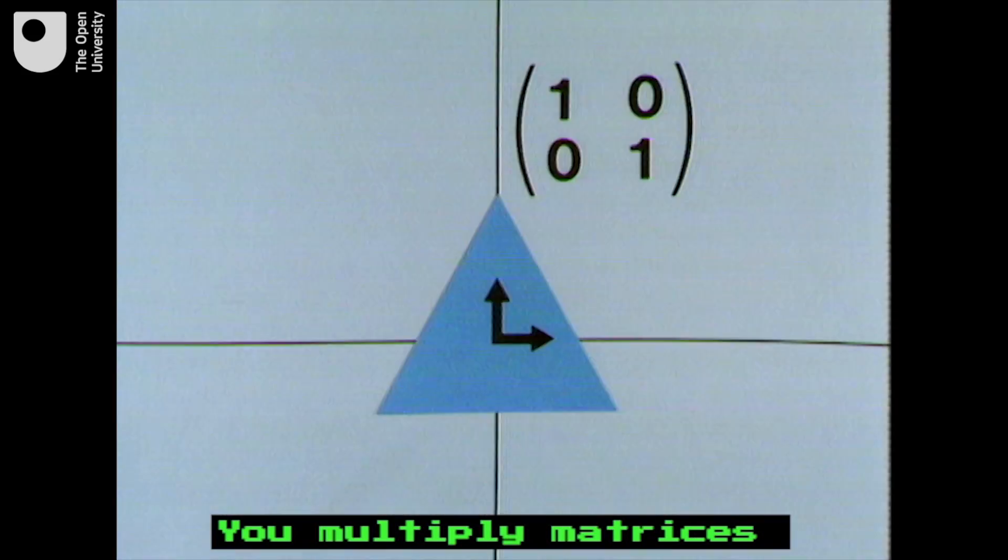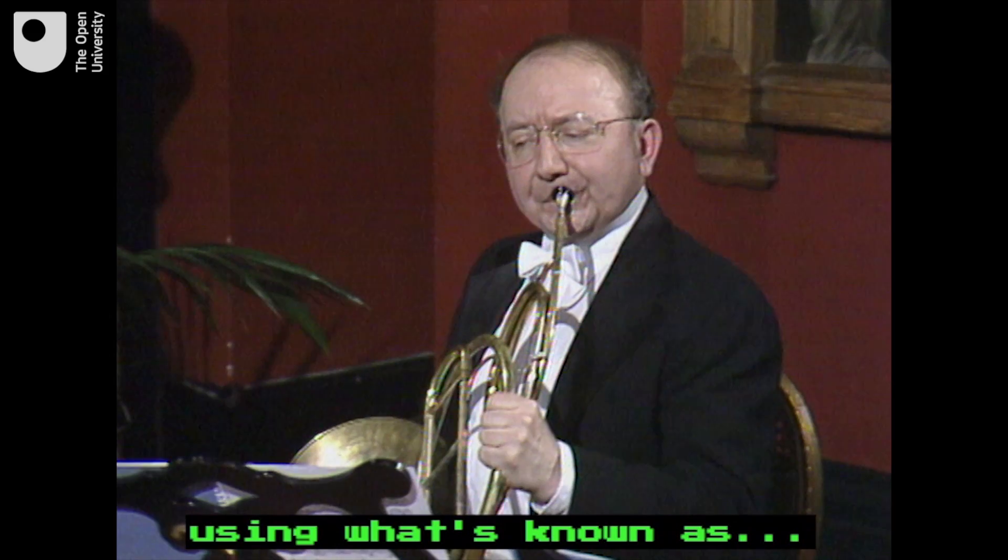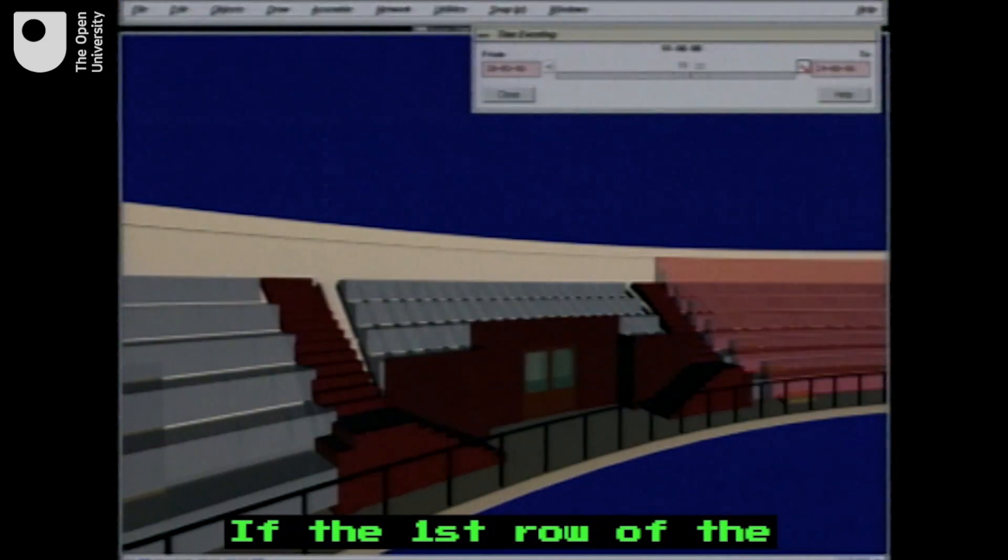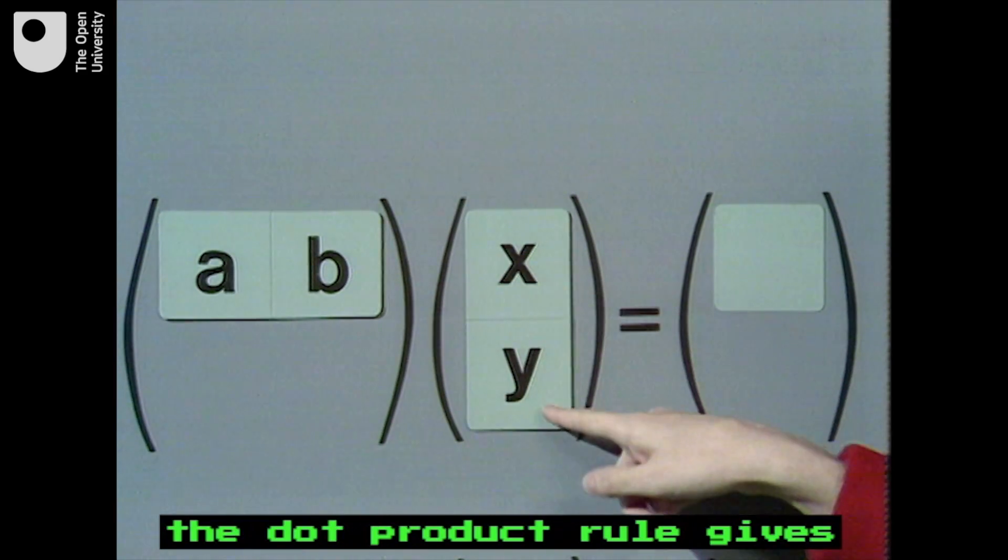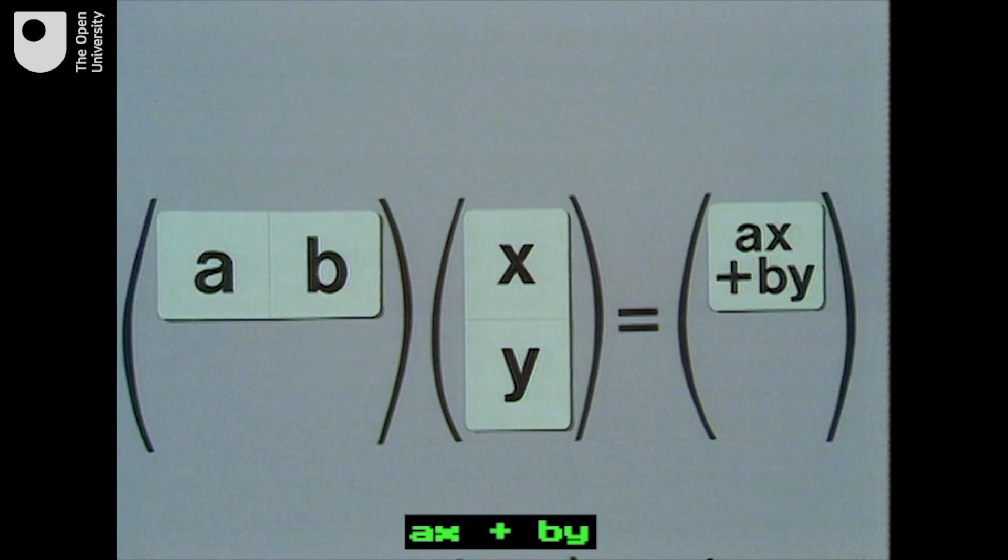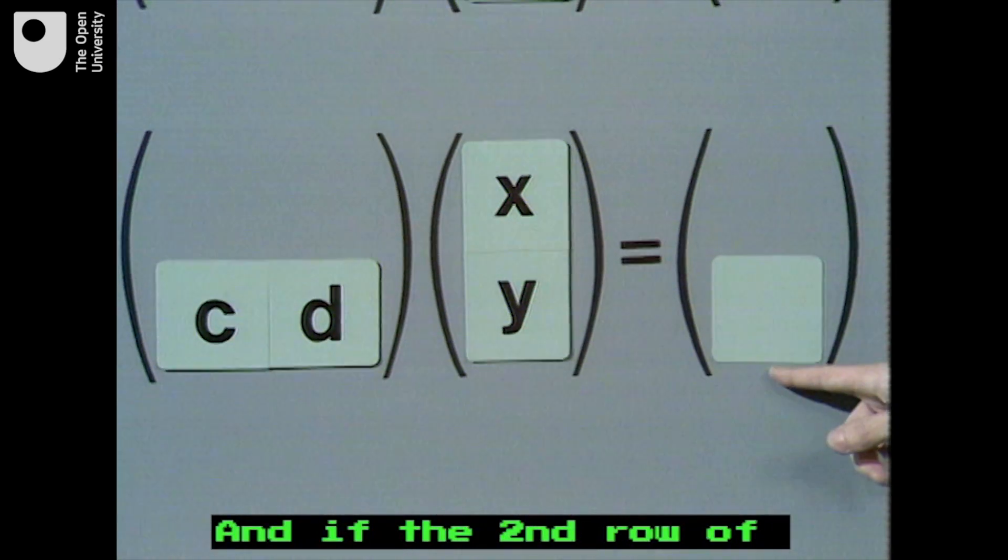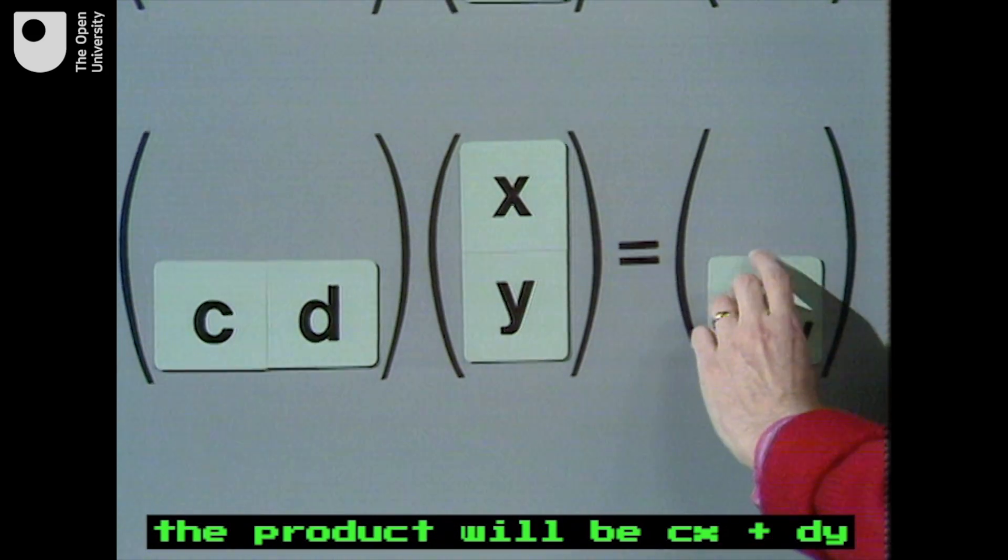You multiply matrices and vectors using what's known as the dot product rule. If the first row of the matrix is (a, b), the dot product rule gives the first coordinate as a times x plus b times y. And if the second row of the matrix is (c, d), the product will be c times x plus d times y.